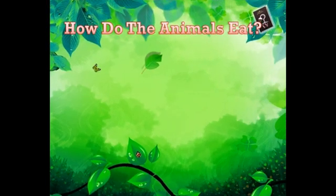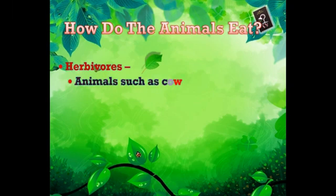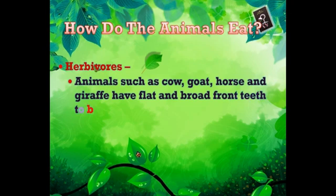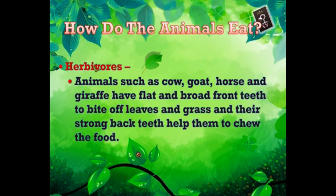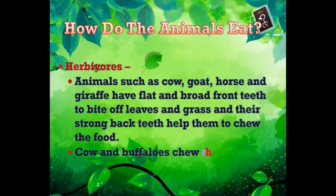Now let us see how animals eat. Herbivorous animals such as cow, goat, horse, and giraffe have flat broad front teeth to bite off leaves and grass, and their strong back teeth help them to chew the food. Cows and buffaloes also chew the cud — have you ever observed cows and buffaloes constantly moving their mouths?